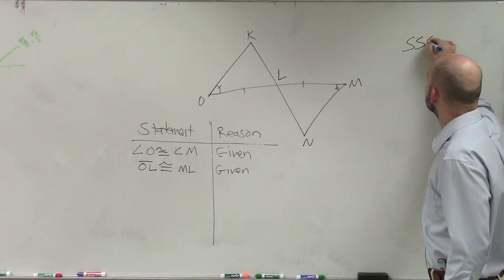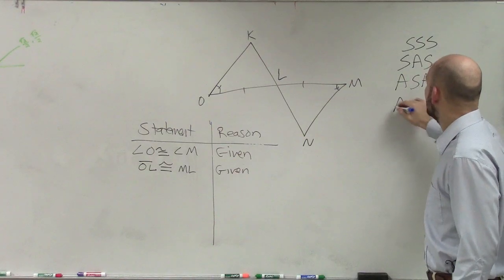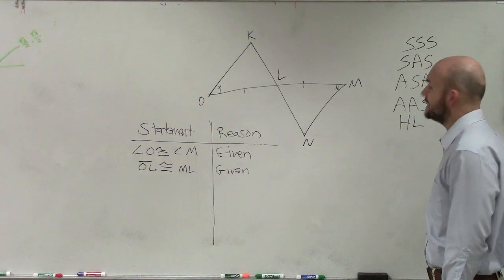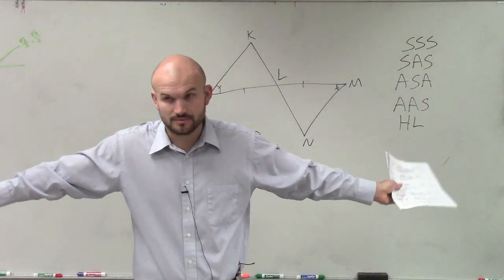Because remember, ladies and gentlemen, when we talked about our congruencies, if we want to be able to prove that things are congruent, there's only so many congruence statements. We talked about side, side, side. Side, angle, side. Angle, side, angle. Angle, angle, side. And HL. Those are the only ways we can show that two things are congruent. Would everybody agree?